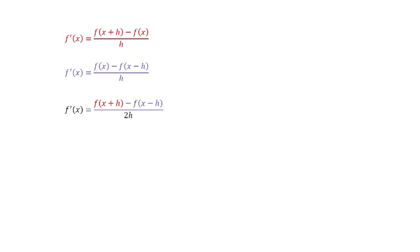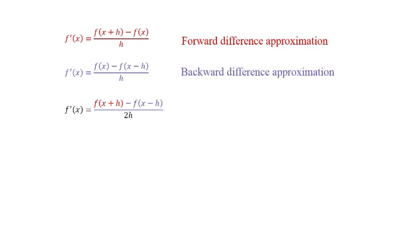The first expression derived from equation 1 is called the forward difference approximation, as we move from f(x) to f(x+h). The second is called the backward difference approximation, moving from f(x) to f(x−h). The third, derived by subtracting equation 2 from equation 1, is called the central difference approximation, since f(x) is the central point between f(x+h) and f(x−h).